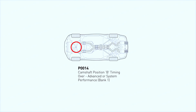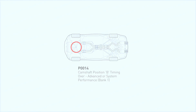DTC P0014 is a generic powertrain code defined as exhaust camshaft timing over-advanced bank one. Code P0014 indicates that the car's engine control module (ECU) senses problems with the camshaft timing — specifically the exhaust camshaft in bank one, position B.